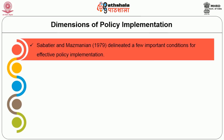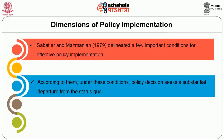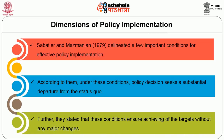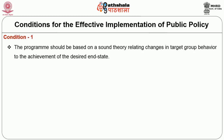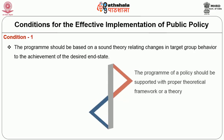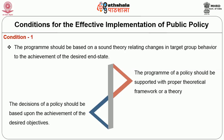Sabatier and Mazmanian in their 1979 work listed important conditions for effective policy implementation. The first condition is that the program should be based on a sound theory relating to changes in target group behavior and achievement of desired objectives. The program must be supported with a proper theoretical framework, decisions should be based on achieving desired objectives, and target groups must comply with policy goals.